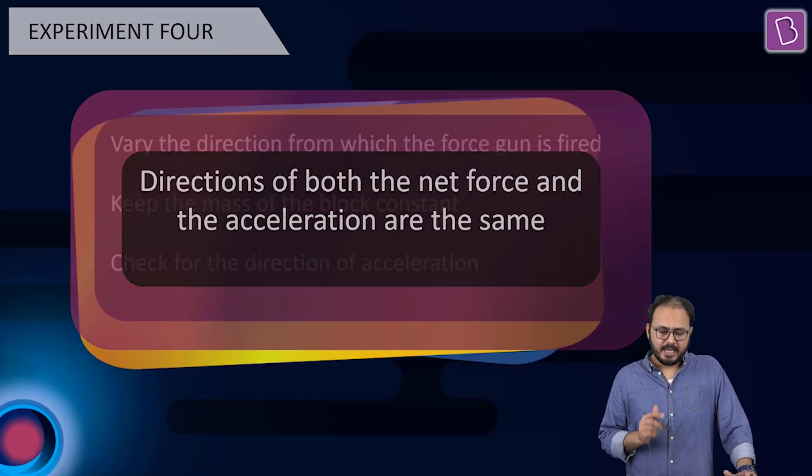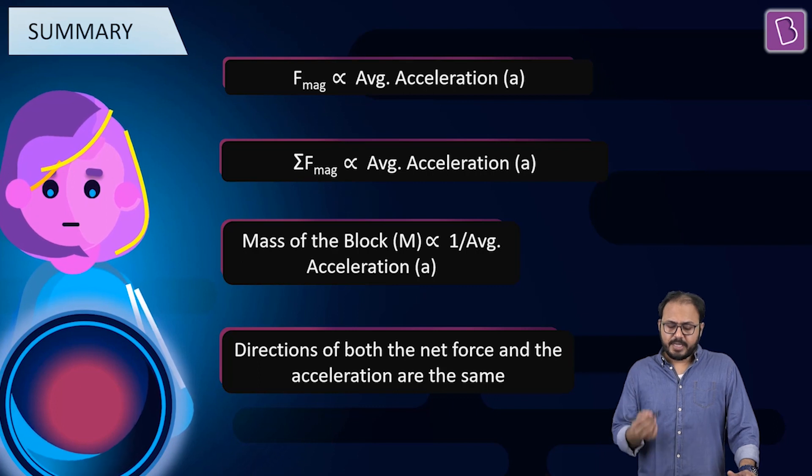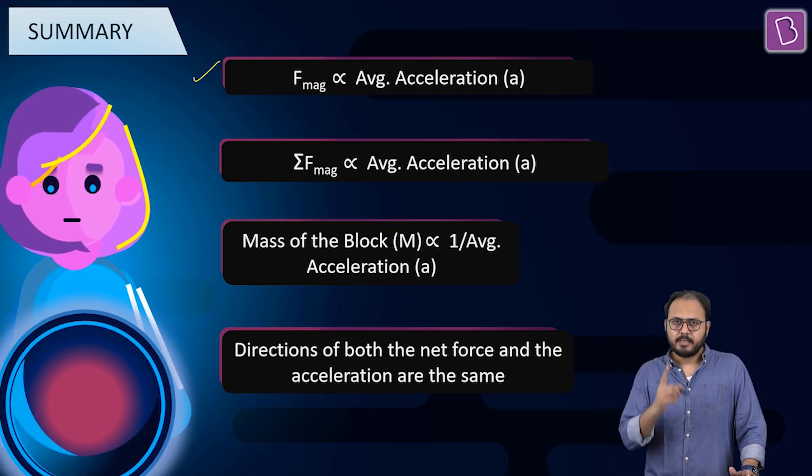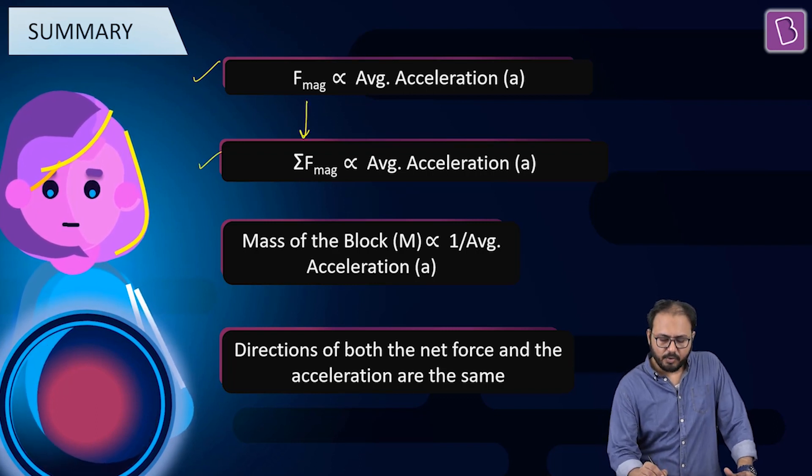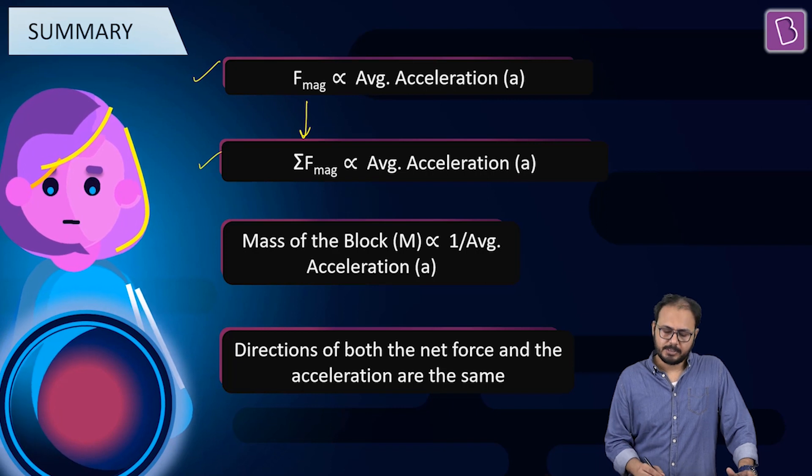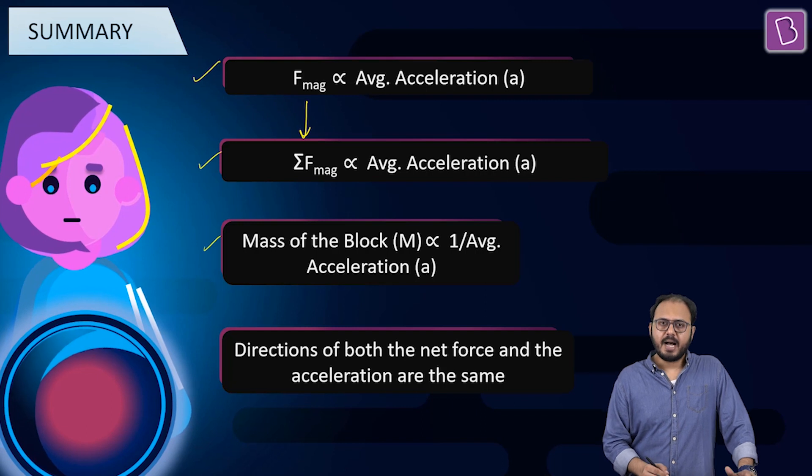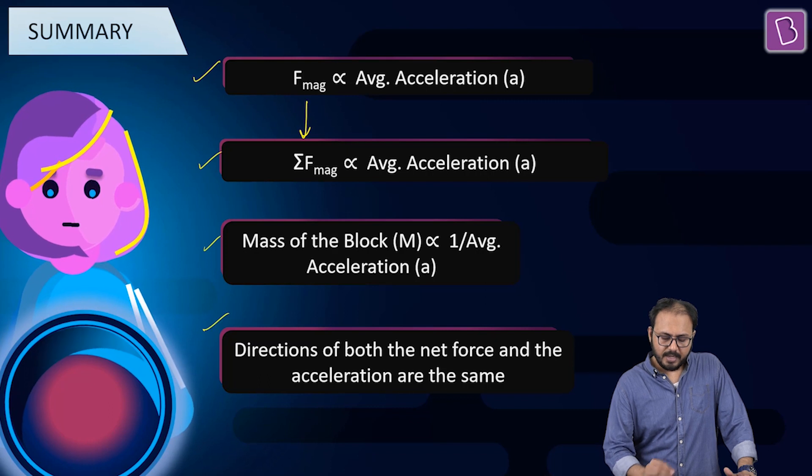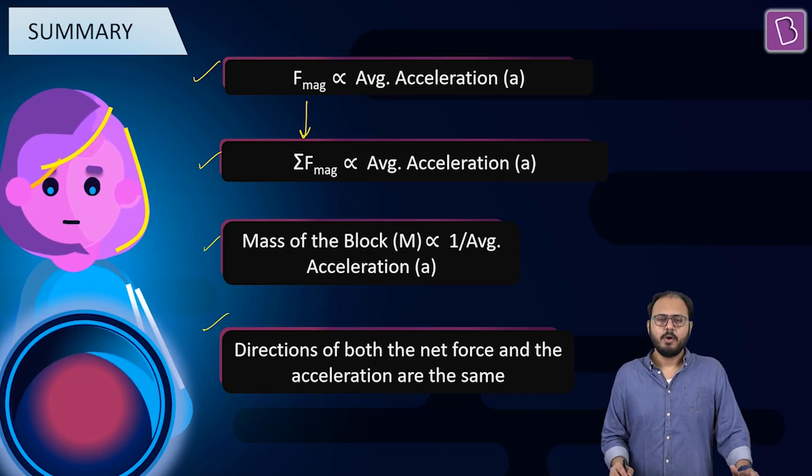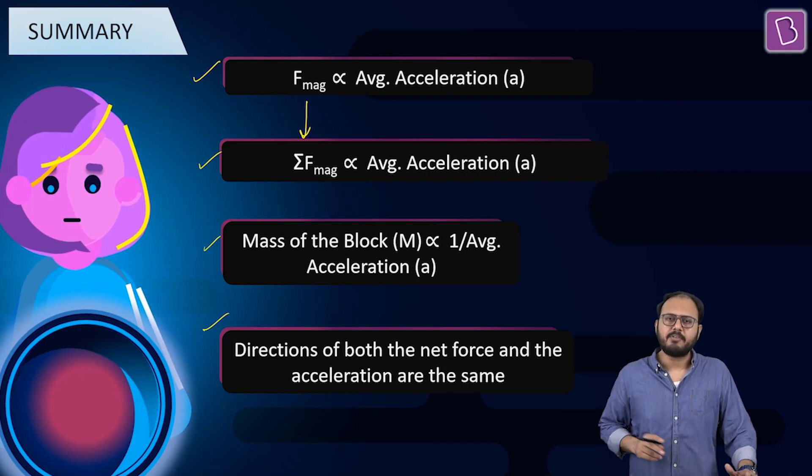Four experiments. Let's talk about the summary. Madova, the summary, please. Here it is. Thank you. F magnitude is proportional to average acceleration. Check. That's the first result. Second, a small buildup on that. Can you see how the F magnitude became sigma F? Multiple forces. Sigma F proportional to average acceleration. Perfect. Third one. The mass was inversely proportional to the acceleration. And the fourth one. The direction is same. What do I get when I combine all the four results of all the four experiments?